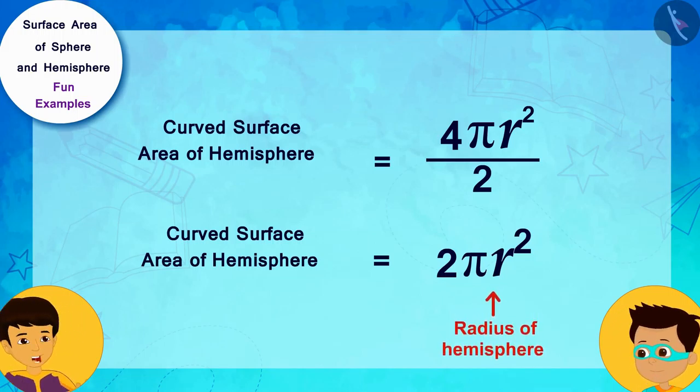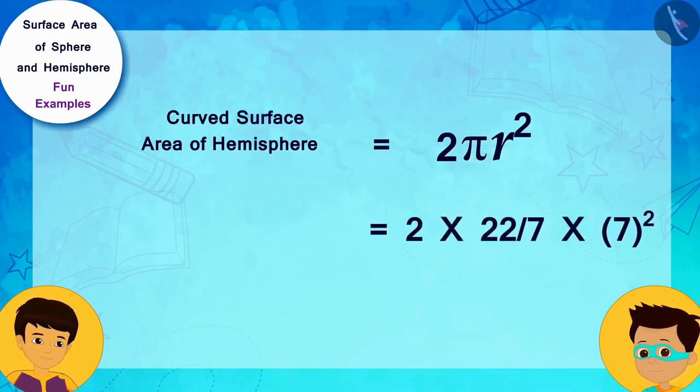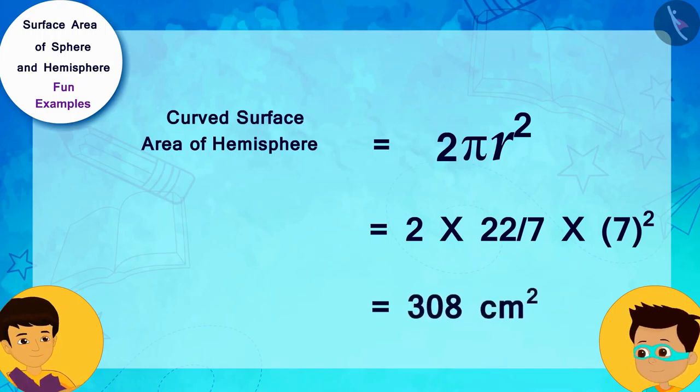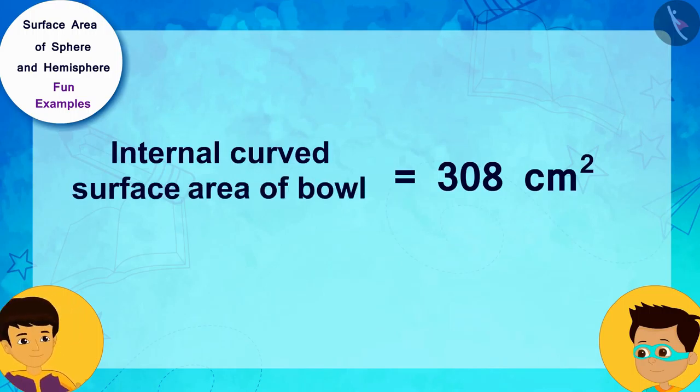Oh, yes! Thanks, Thomas! Let's solve this by writing the radius of the bowl 7 centimeters instead of r. The internal curved surface area of the bowl is 308 square centimeters.